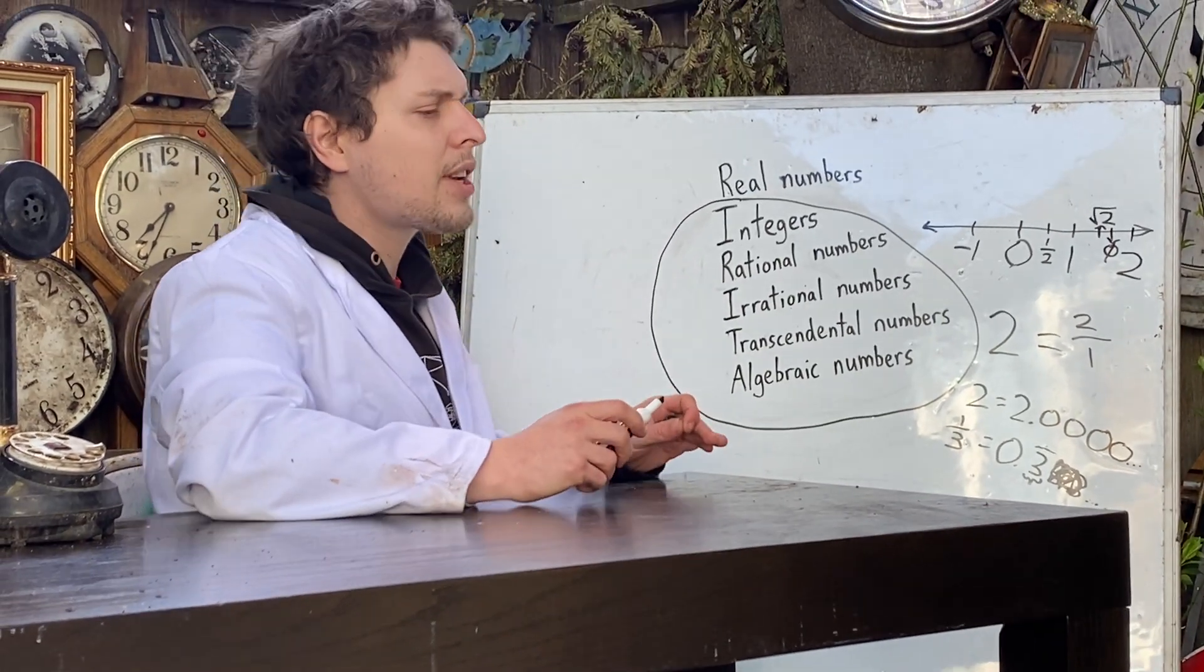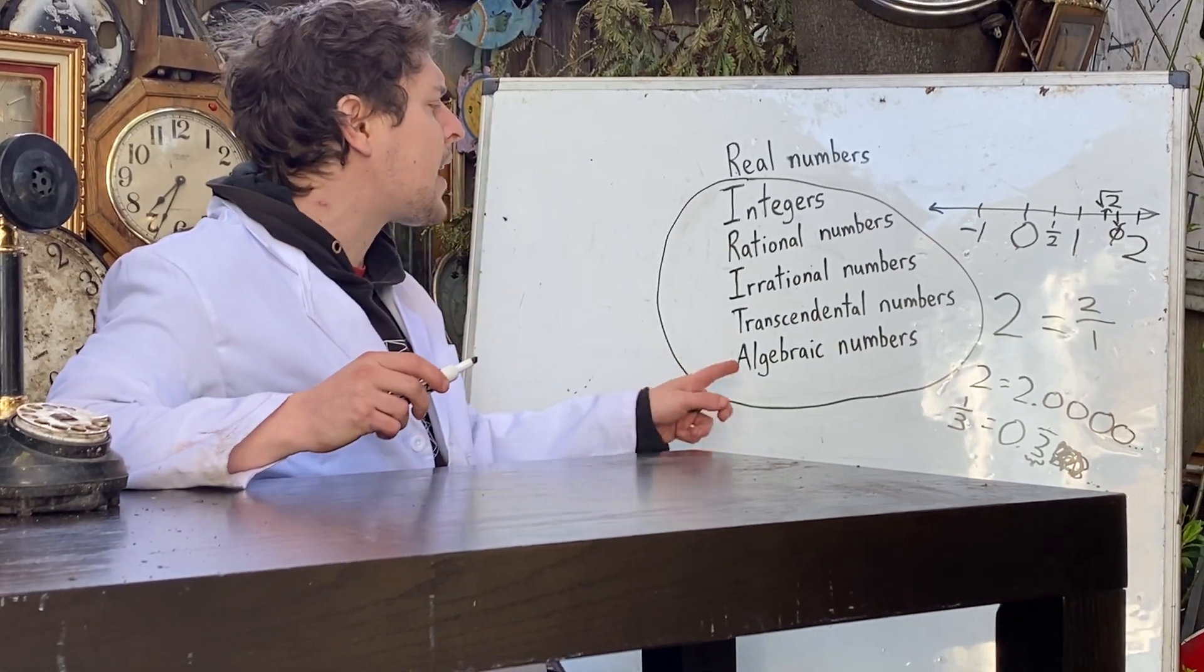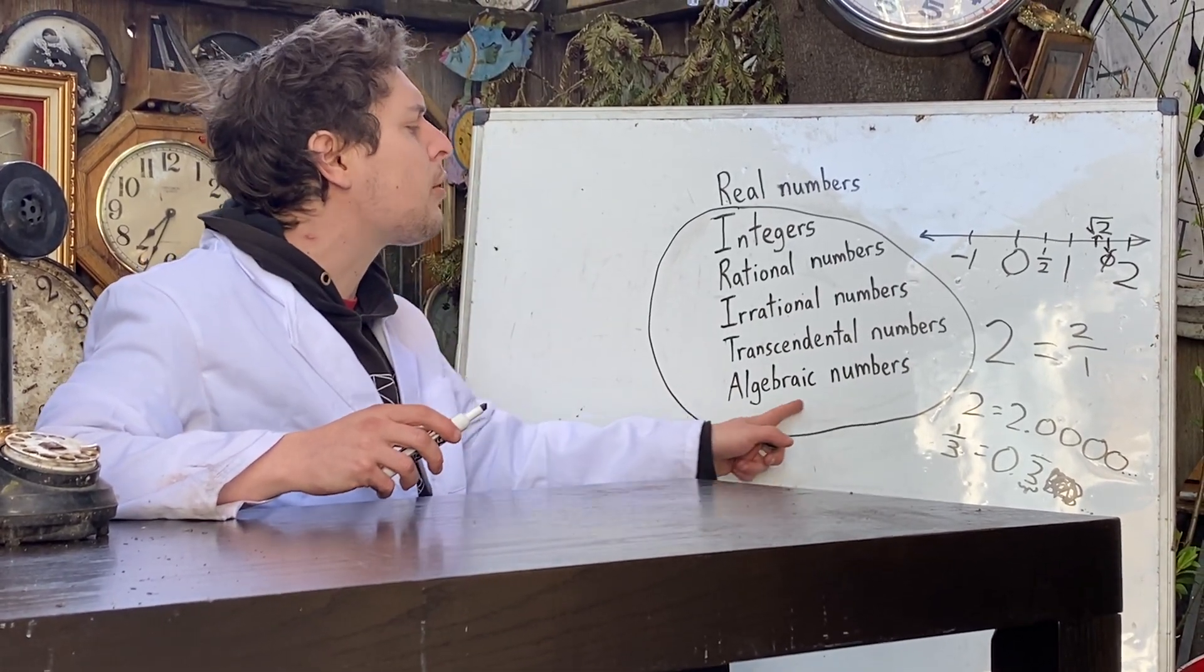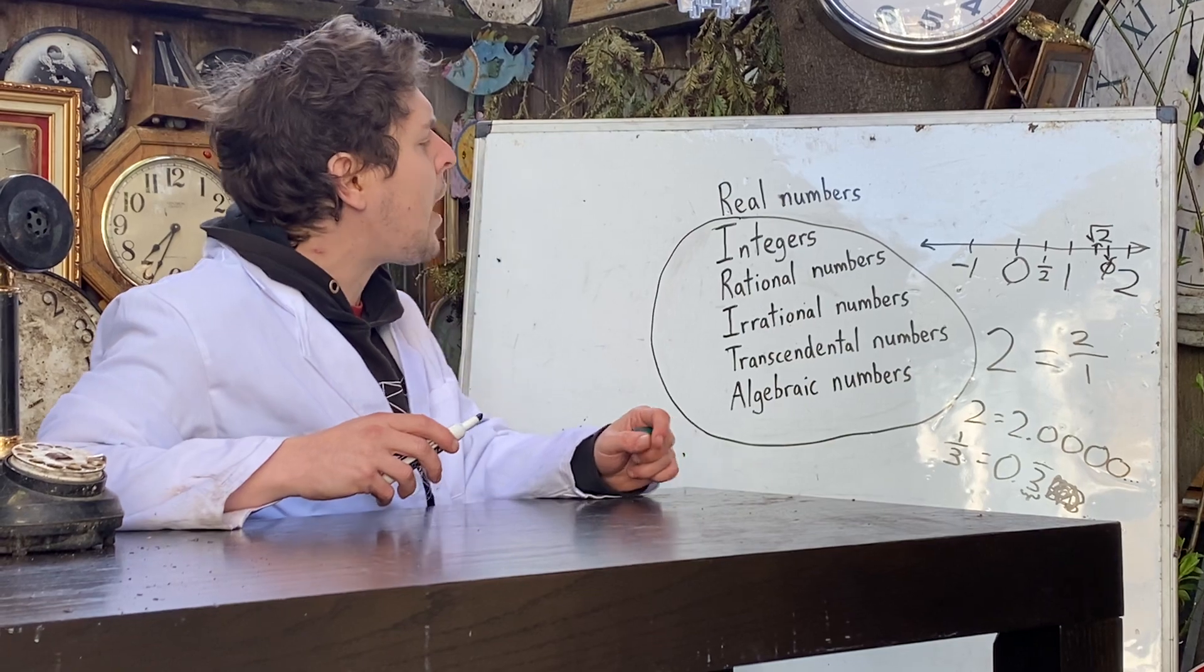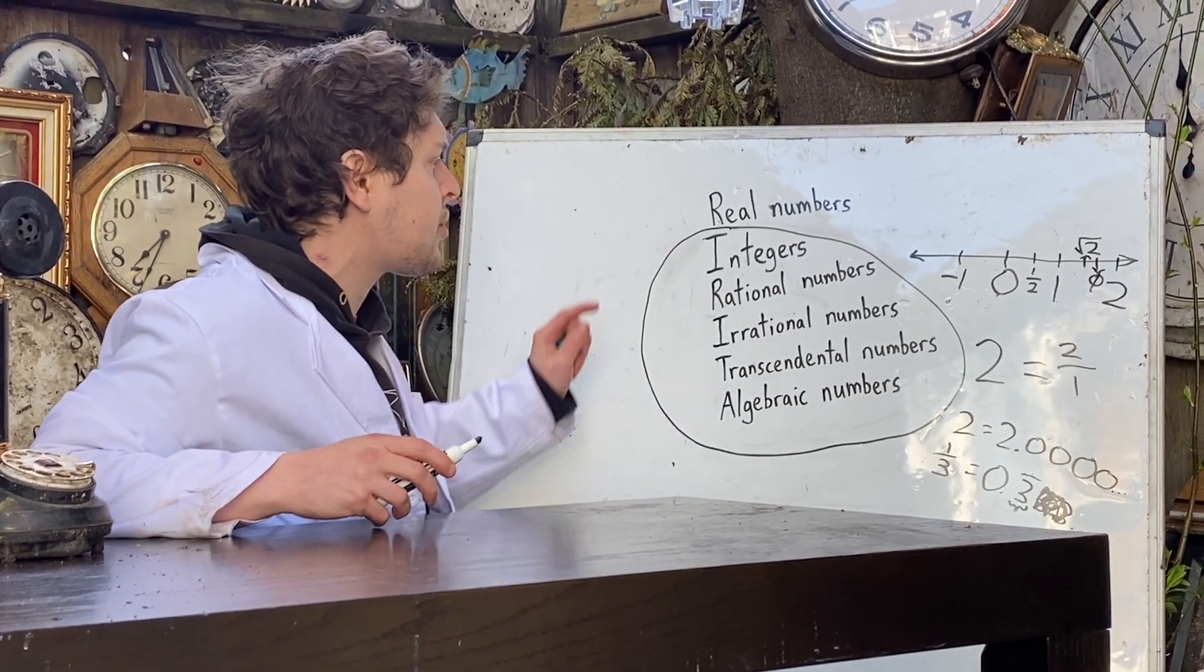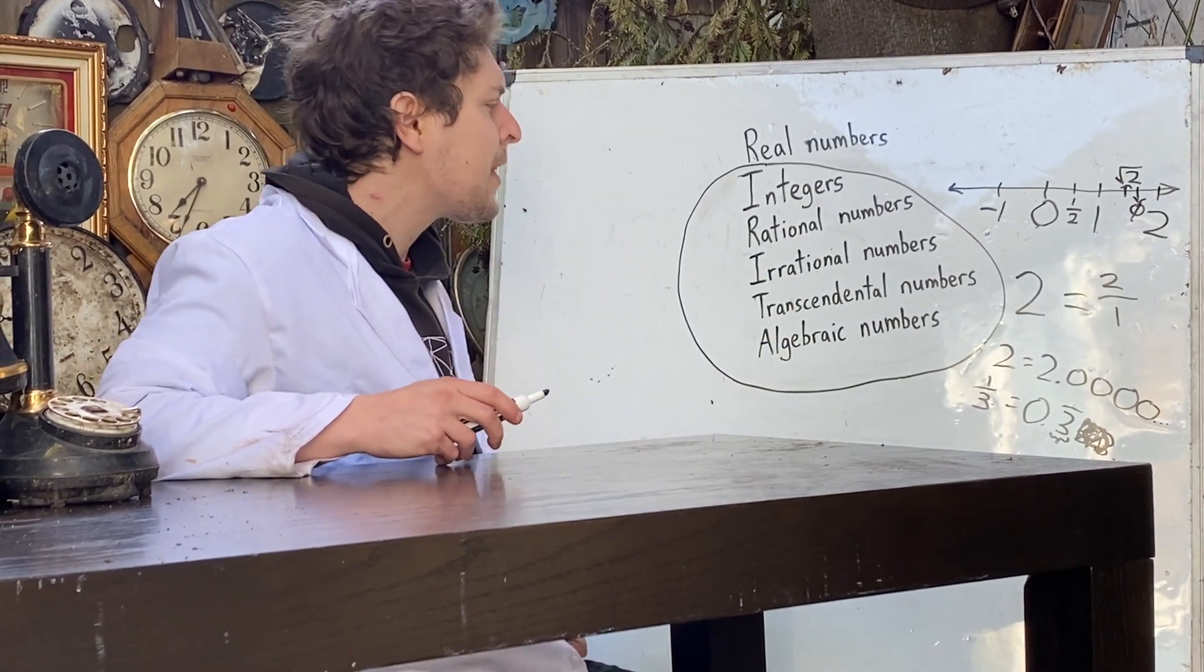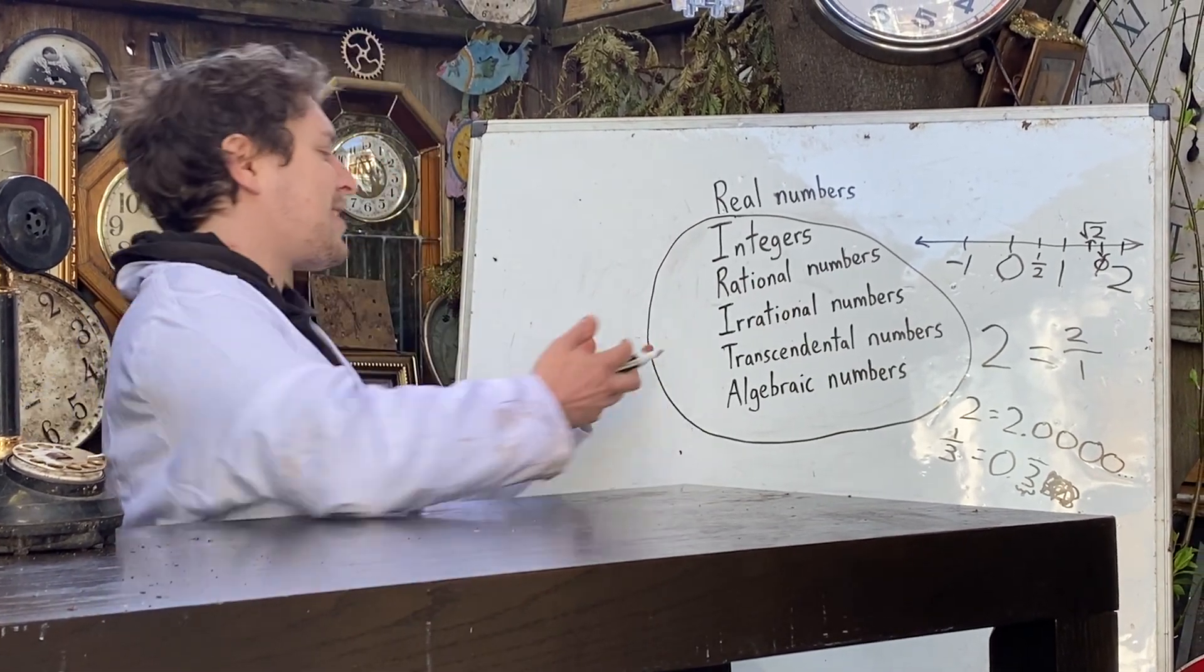But they shouldn't necessarily just be clumped into one category of irrational numbers, because these next two names on here are essentially the two types you could have of irrational numbers. First, noting algebraic numbers, I didn't say that it was an algebraic irrational number, so algebraic numbers actually also include our integers, our rational numbers, and some of our irrational numbers that we would call our algebraic irrationals. And the irrationals that aren't algebraic are what's known as transcendental. So what does that mean?